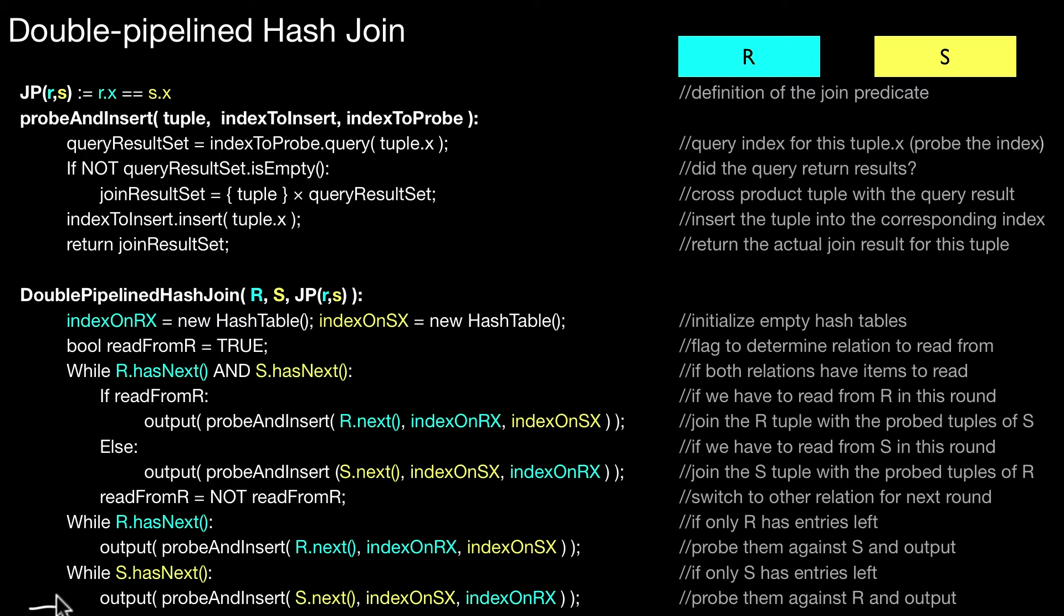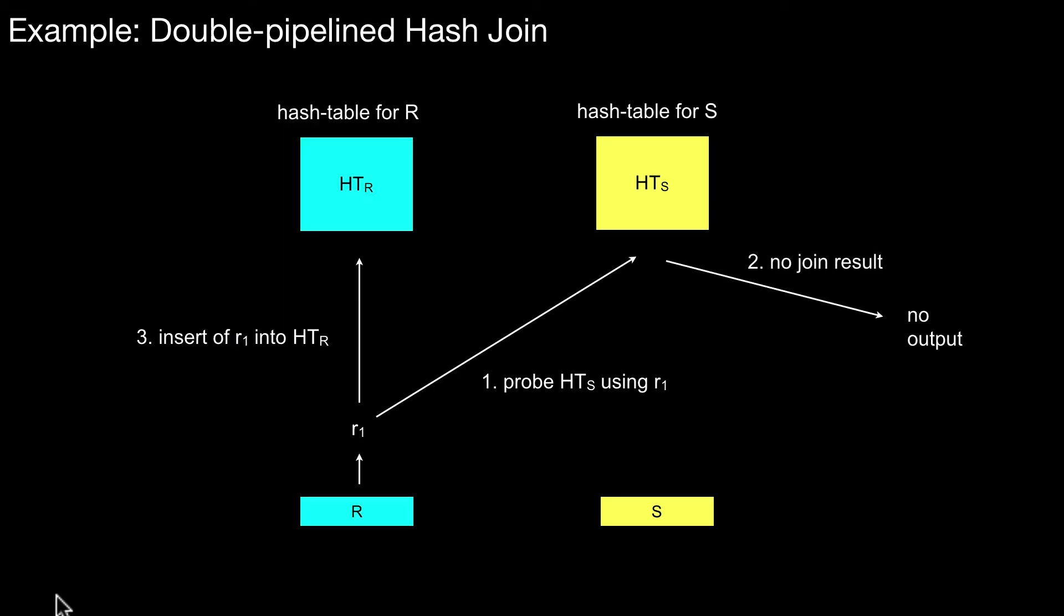I'd like to briefly explain the similarity to the simple hash join again. That is the general pattern: drawing from one probing against the other. The order doesn't matter. We could also first insert and then probe.